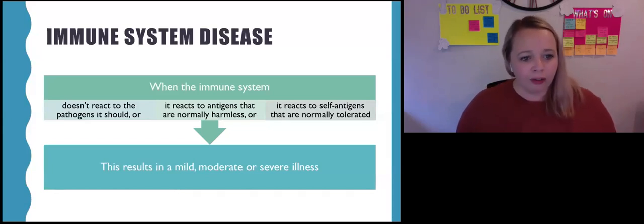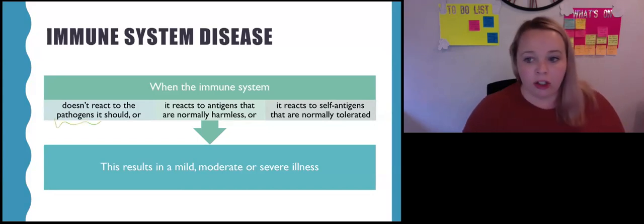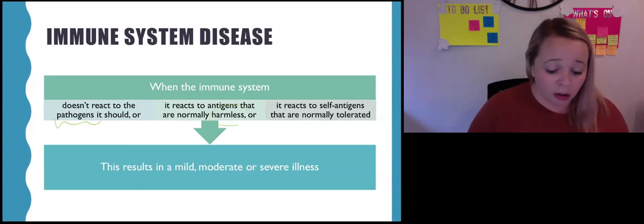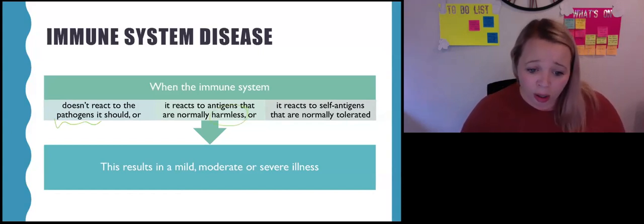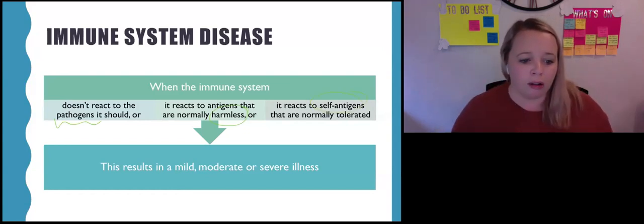Any kind of immune system disease is when the immune system doesn't do what it should normally. It doesn't react to pathogens the way it normally should. It reacts to antigens that are normally harmless, or it reacts to self-antigens that are normally tolerated. So there are three different categories.